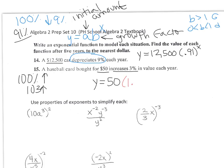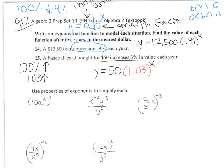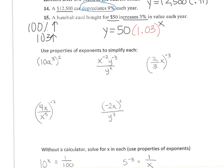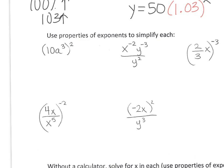Second one: a baseball card bought for $50 increases 3%. Everything starts at 100%, and if you're increasing, it's going to be 103%. You need to write that as a decimal, so it's 1.03 to the x power. For the second part, you can plug in 5 for x. This would be growth, because it's increasing and it's greater than 1.